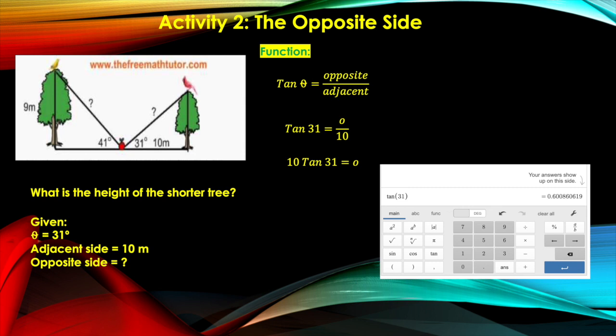Now I'm going to use two decimal places here for the value of tangent 31 degrees, so that would be 10 times (the value of tangent 31 degrees is 0.60 using two decimal places) equals the opposite side or o. Then we do the math: 10 times 0.60.